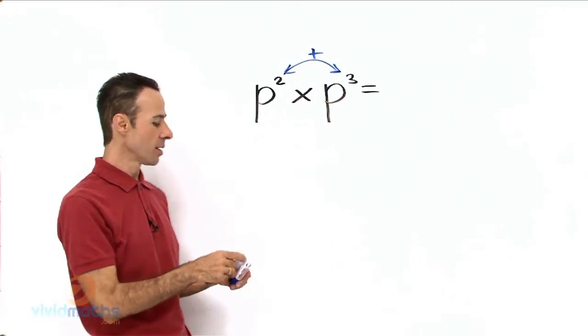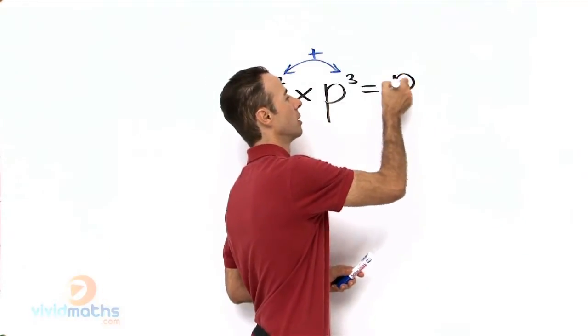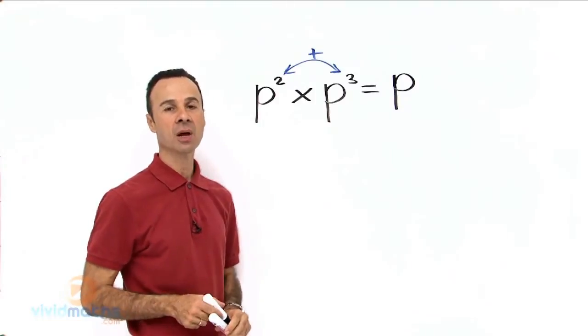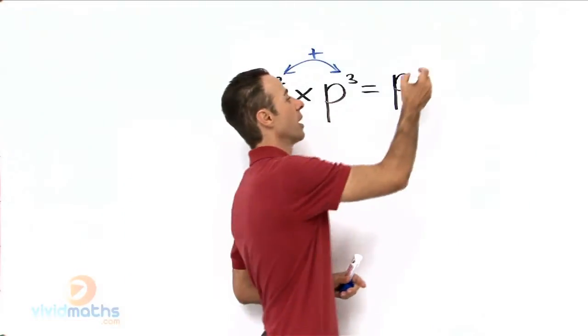So what do we get here? Quite simply, this is going to yield p to the power of 2 plus 3, and that yields a power of 5.